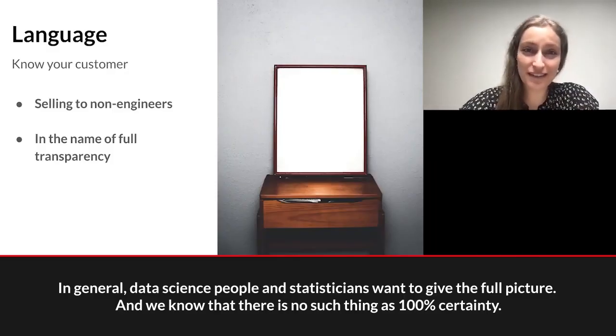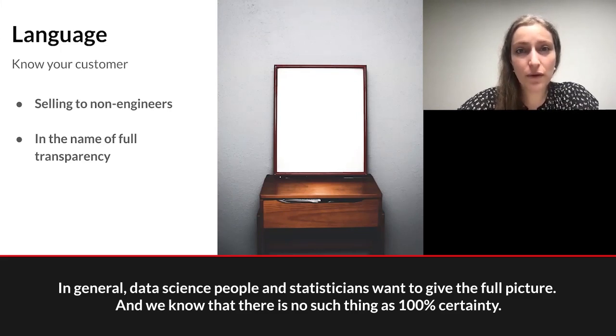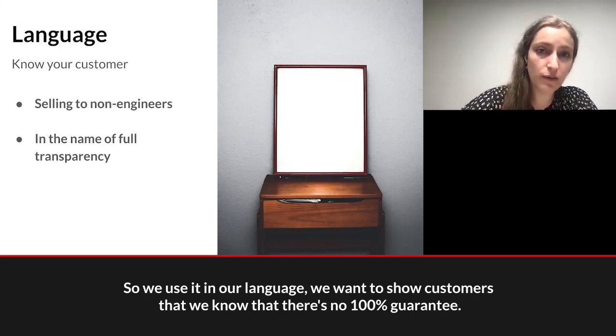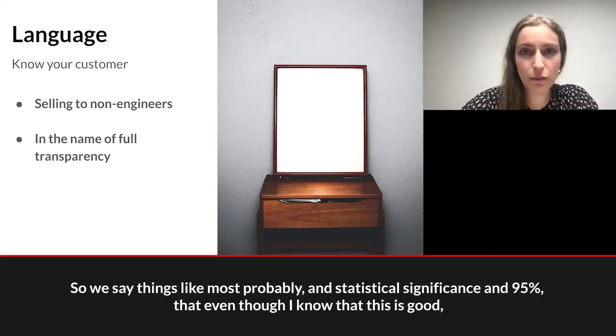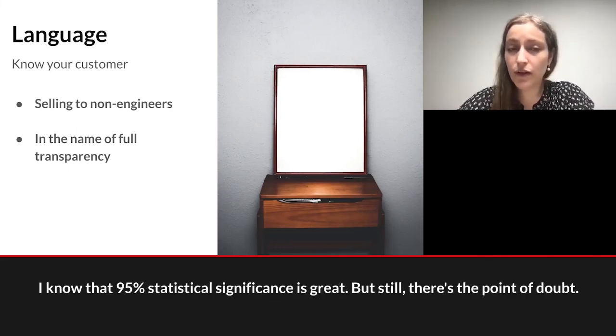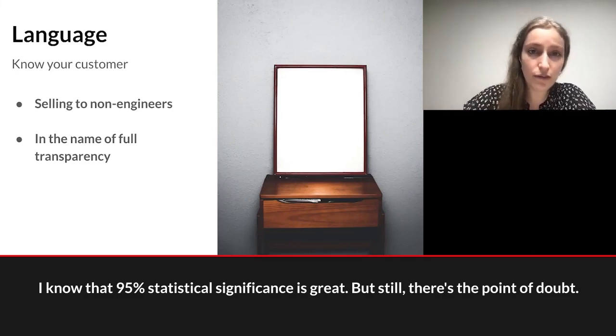In general, data science people and statisticians want to give the full picture, and we know that there is no such thing as 100% certainty. So we use it in our language - we want to show customers that we know there's no 100% guarantee. We say things like 'most probably' and 'statistical significance' and '95%.' Even though I know that 95% statistical significance is great, there's still the point of doubt.